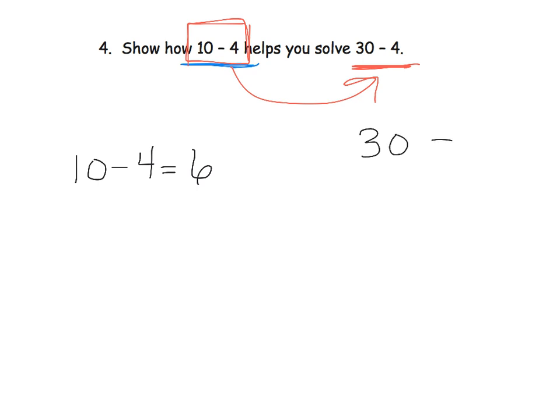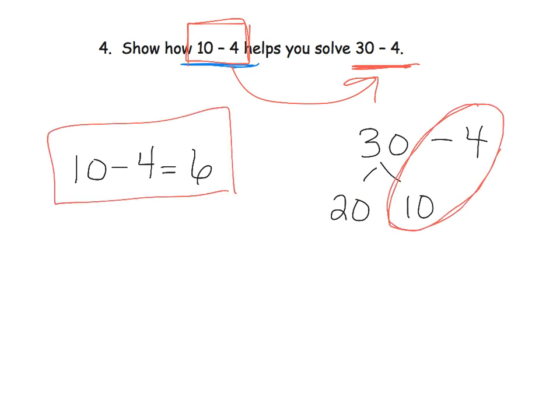And over here for 30 minus 4, through decomposition, we have a 10 minus 4 right here. So this 10 minus 4 equaling 6 helps us over here. So now we have 20 plus 6 equals 26. So that might be one way a second grader explains that.